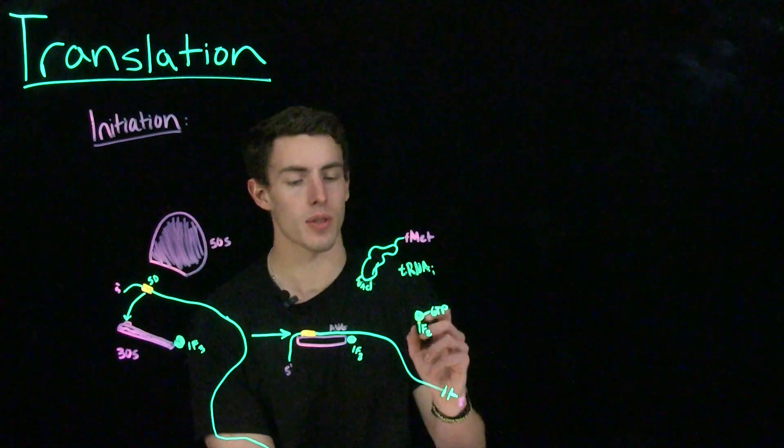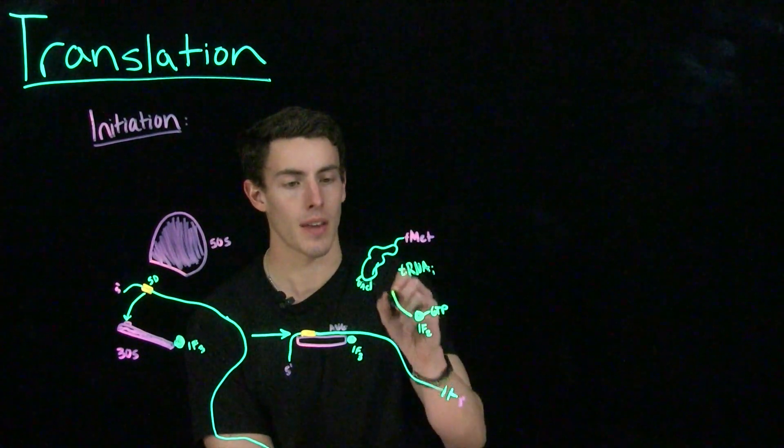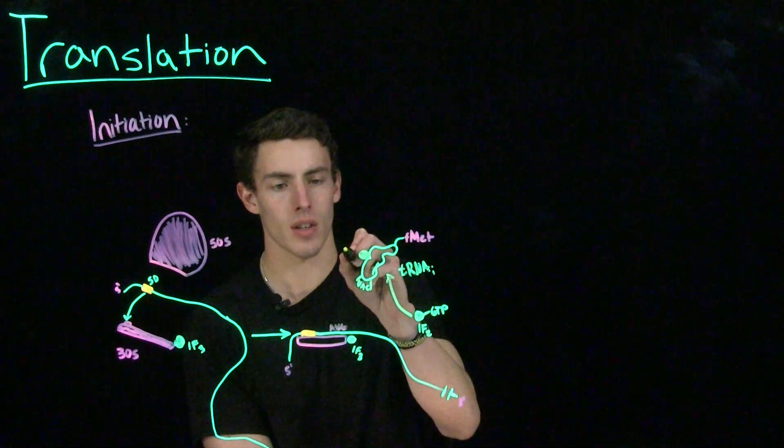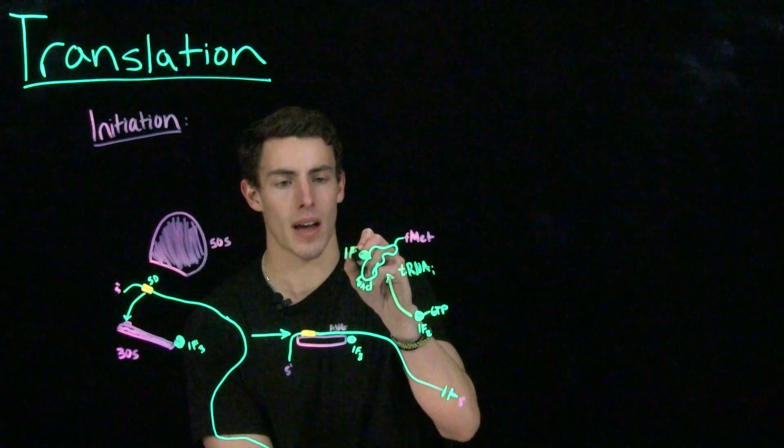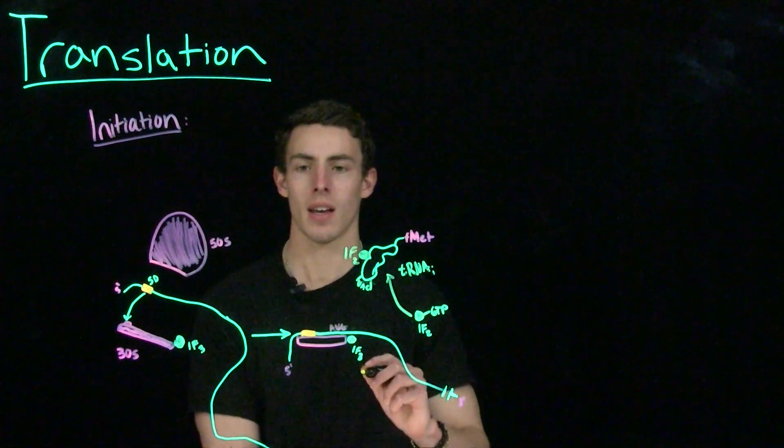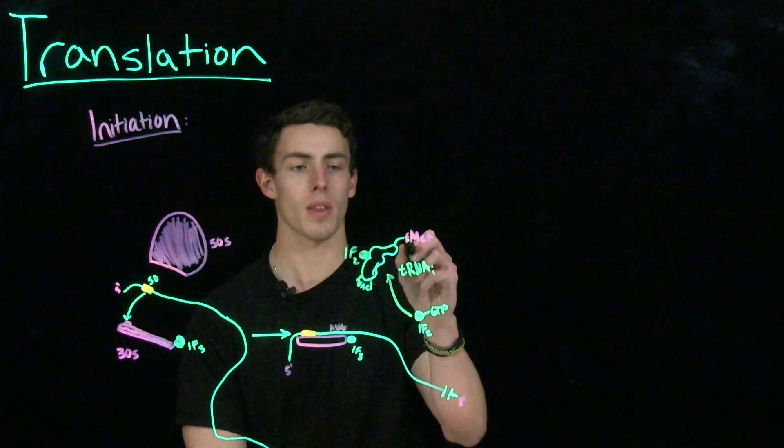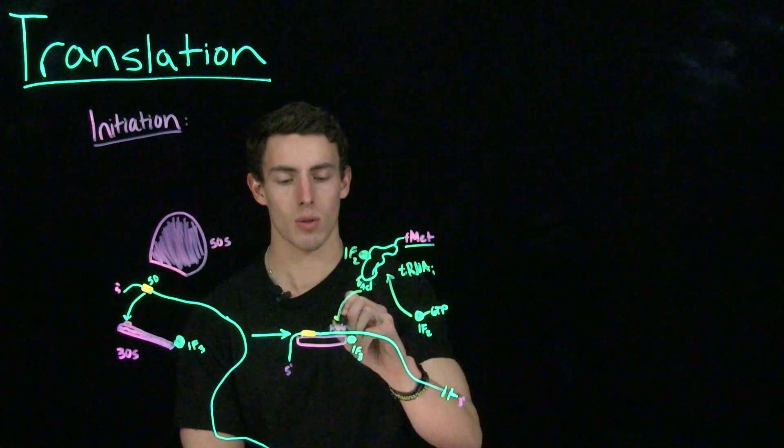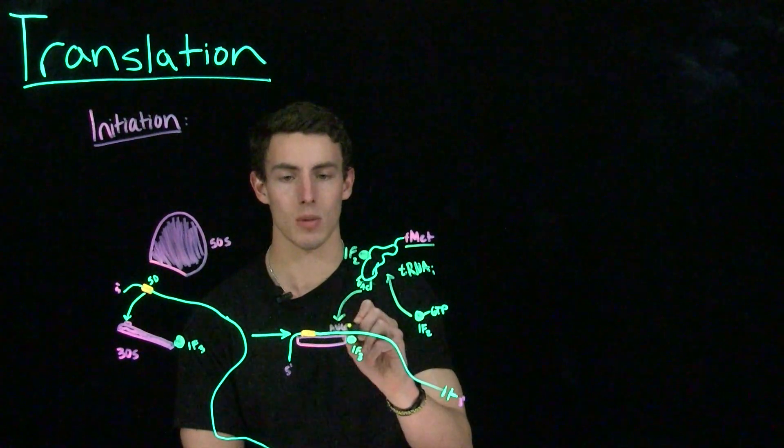Next, IF2 is going to complex with GTP, and then it's actually going to bind to our initiator tRNA. So we'll have an initiator tRNA bound IF2 complex. And then this initiator tRNA with fMet, because remember this is prokaryotic, is going to bind to our start codon, which is going to be AUG.